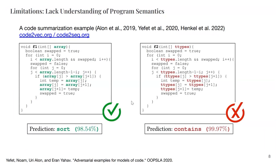For example, the well-known code summarization tool Code2Vec — by just changing the variable name from 'array' to 'ttypes' — changes its correct prediction from 'sort' to 'contains.' This kind of adversarial example demonstrates that existing code models are not robust and generalizable because they do not learn actual program semantics or behaviors in order to reason and make predictions.